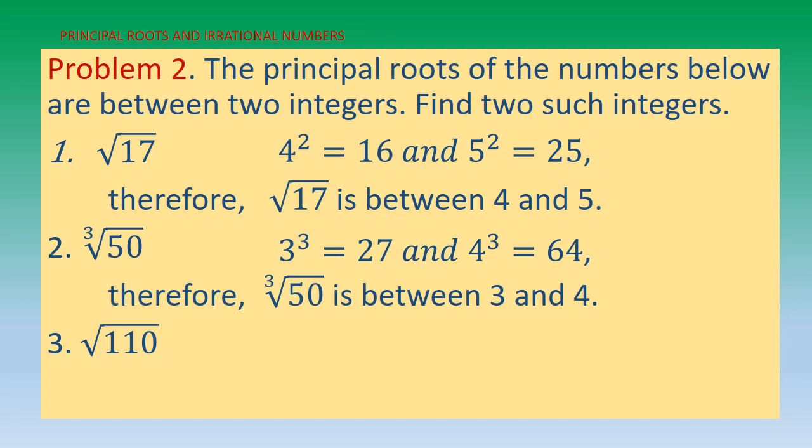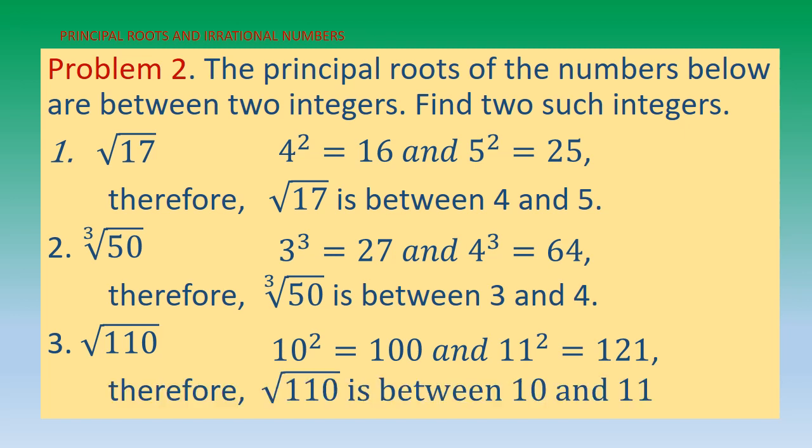The last example: √110. Think of perfect squares less than and greater than 110. We have 10² = 100 and 11² = 121. Since 110 is between 100 and 121, √110 is between 10 and 11.